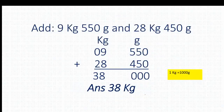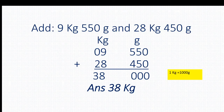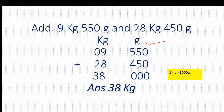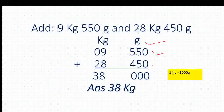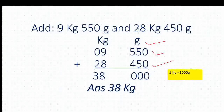Moving to the next page. Here our question is 9 kg 550 gram and 28 kg 450 gram. Our first step is to write the units here. I have written kg and gram — and again I am telling you, you have to write gram in 3 digits. After arranging the digits we have got this. After that we have to do addition starting with 0 plus 0.